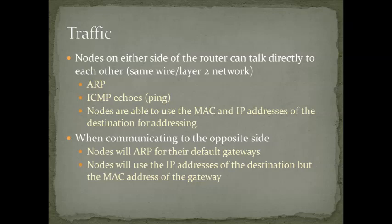This changes quite a bit when you're going across a router. For example, nodes on the 1 network trying to communicate with nodes on the 2 network would have to first ARP for the default gateway, and then they would use the IP address of the destination but the MAC address of the gateway. For example, if 1.1 was trying to communicate with 2.1, it would ARP for the gateway 1.254, forward the frame to the router, and then the router would send it on to 2.1. So the MAC address used in the Ethernet frame would be the MAC address of the router's F0.0 interface, but the IP destination would be 2.1.